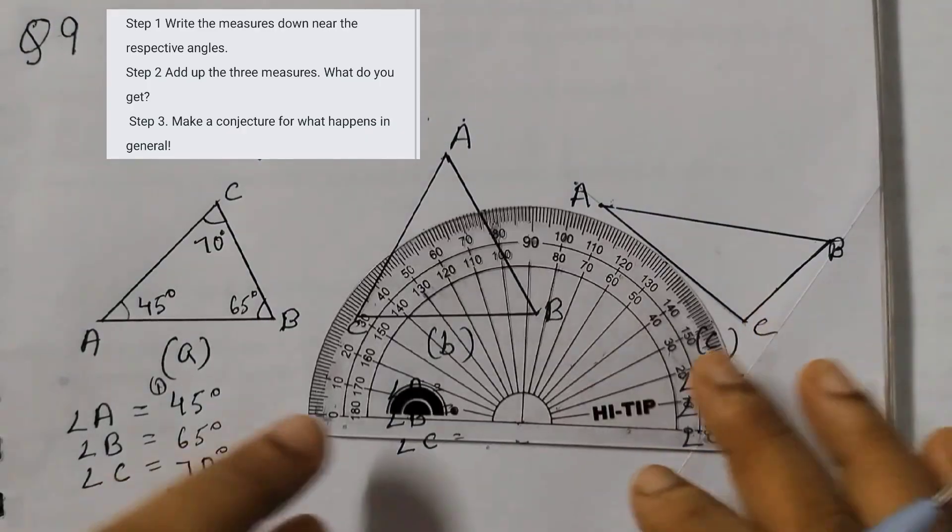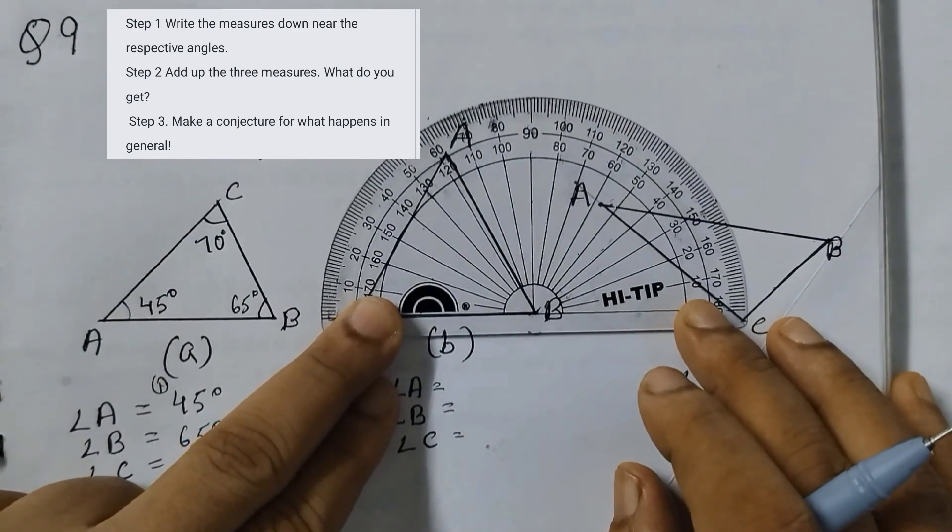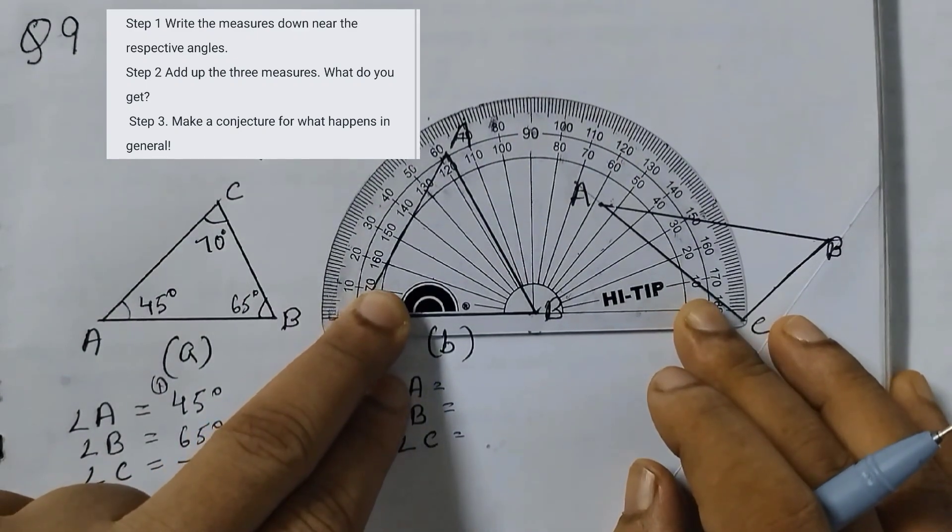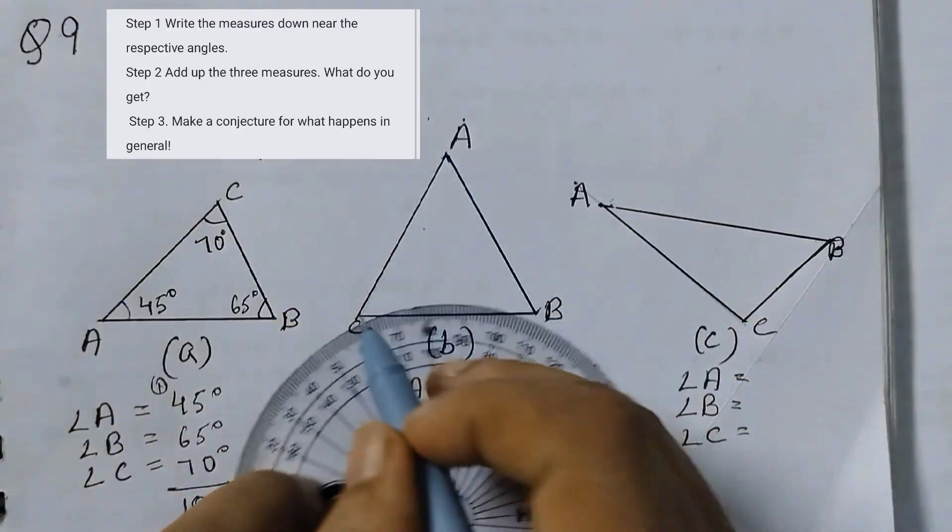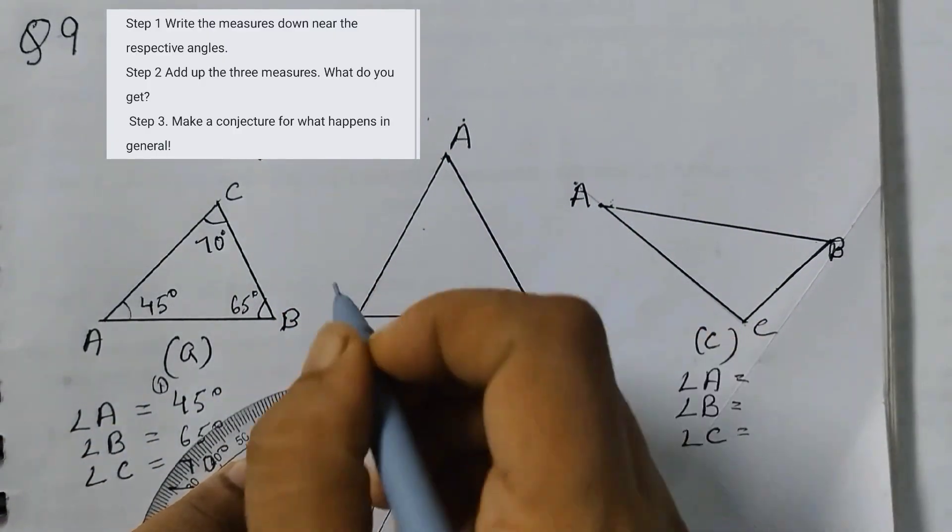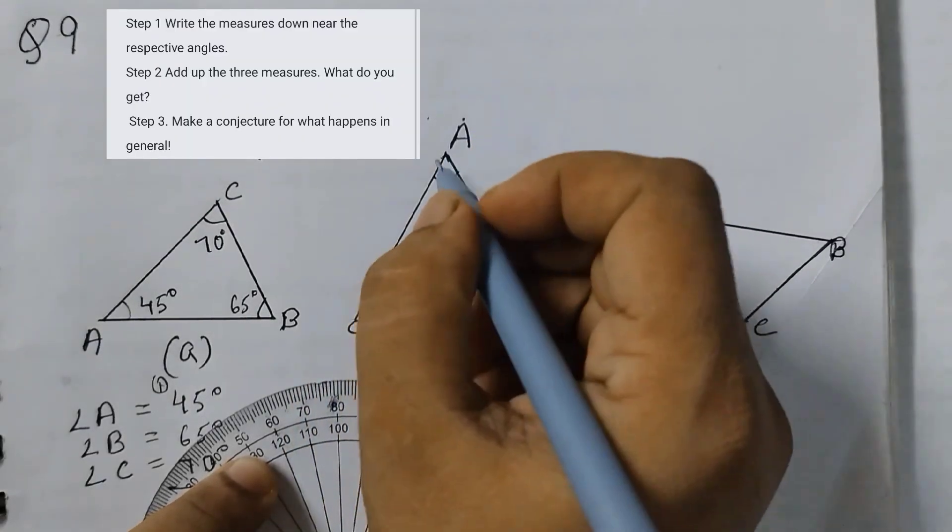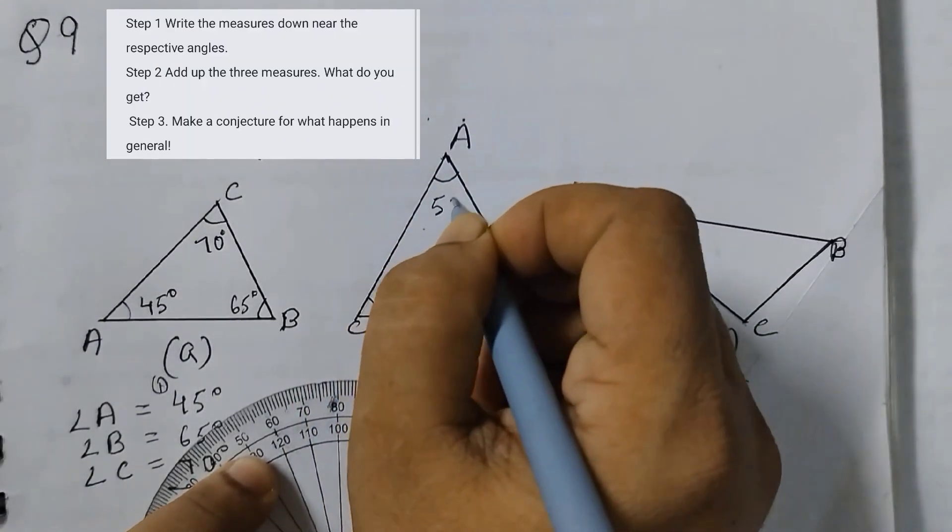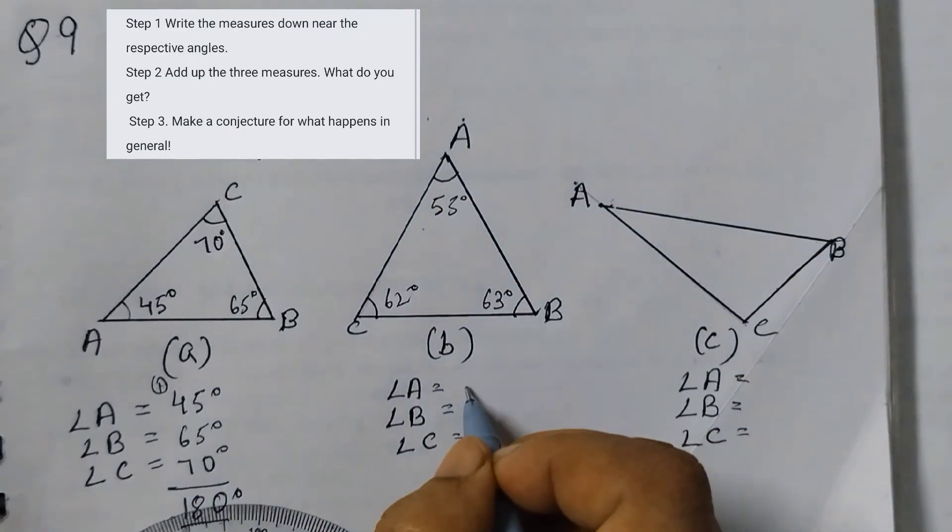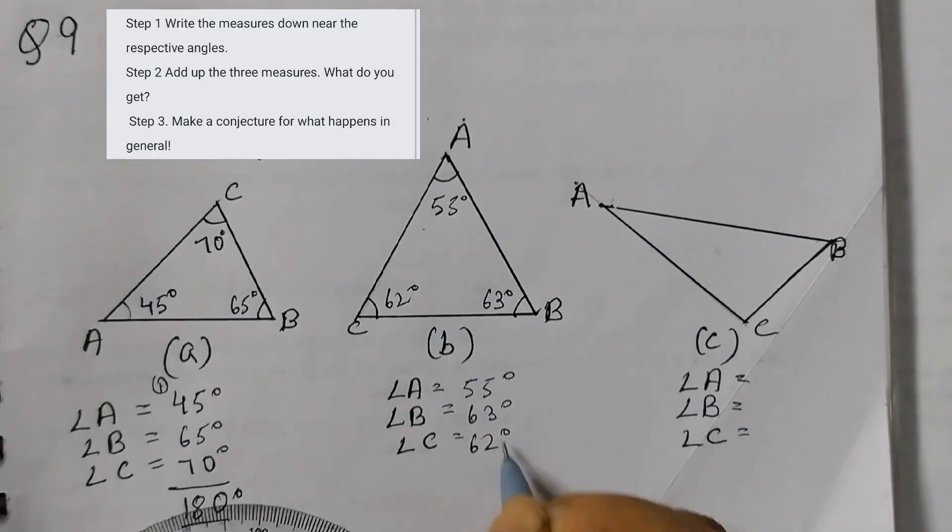For the next one you need to measure it. So when you do angle B you will find out this measurement is 63 degrees. This measurement angle C is 62 degrees, and this measurement here is 55 degrees. Angle A 55 degrees, B 63 degrees, angle C 62 degrees.